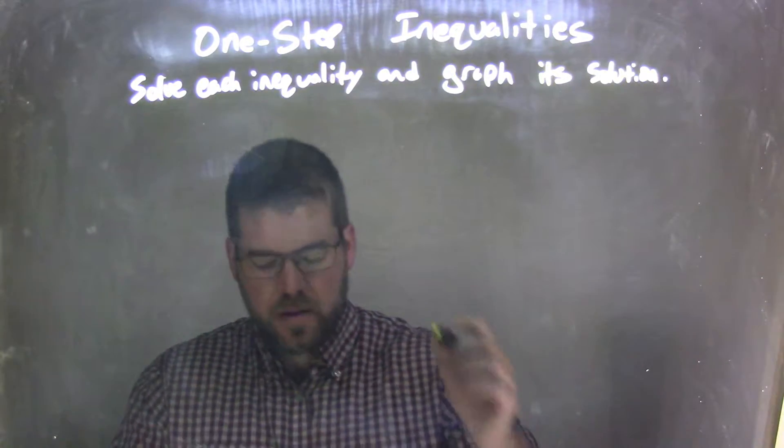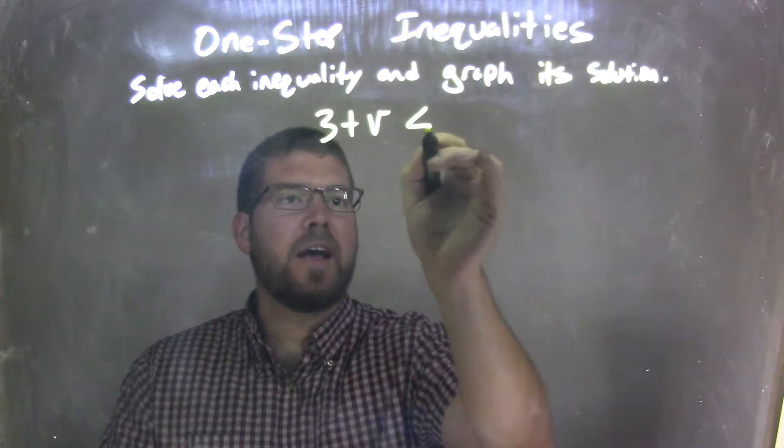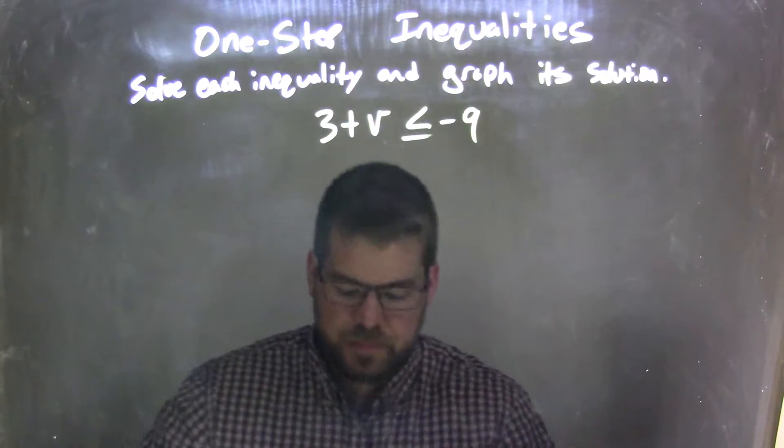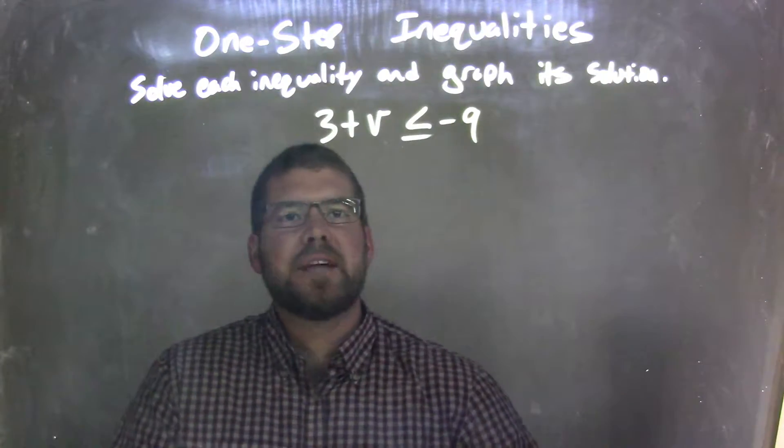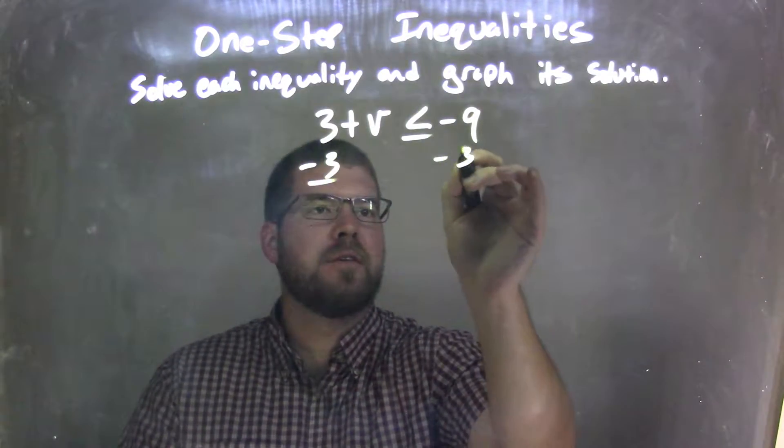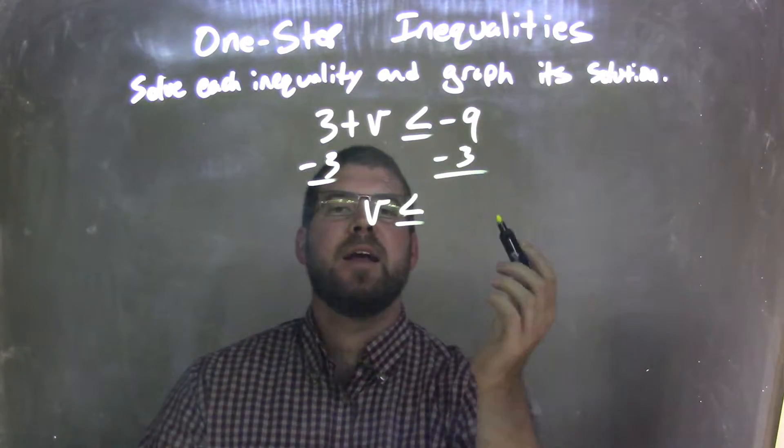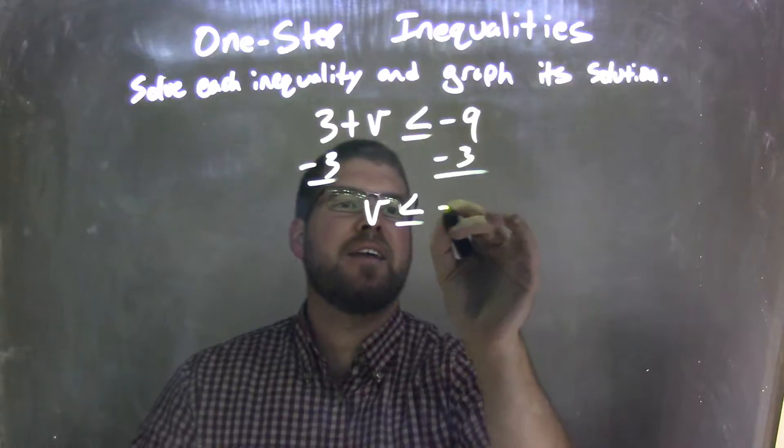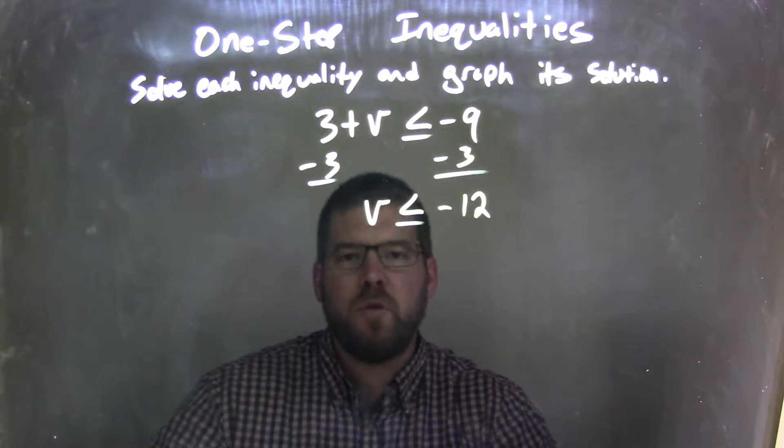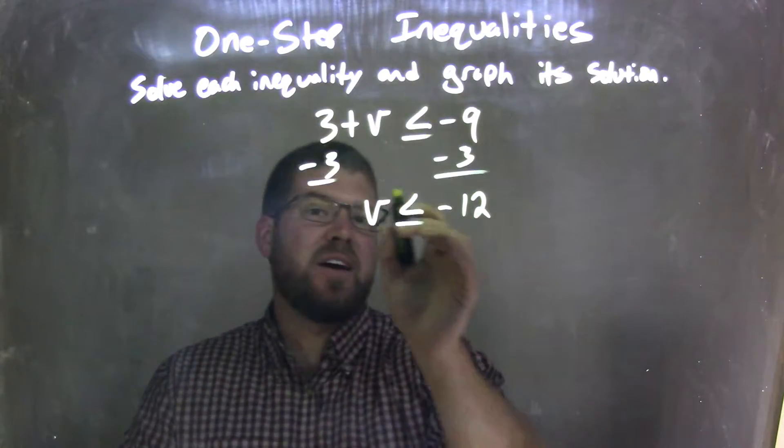So if I was given this inequality, 3 plus v is less than or equal to negative 9. Well, my first step here is I need to subtract 3 from both sides. So I'm going to subtract 3 from both sides, leaving me with v is less than or equal to negative 9 minus 3, which is negative 12. So v is less than or equal to negative 12 here, and that is my final answer.